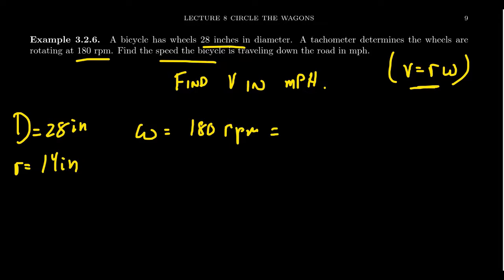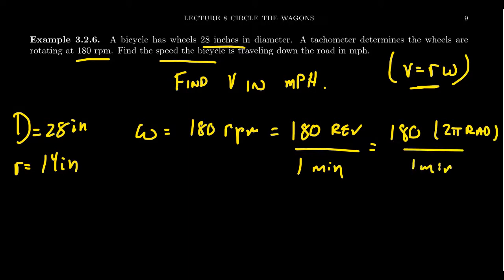Revolutions per minute means 180 revolutions per minute per one minute of time. And like we've seen what to do, one revolution is equal to 2π radians, like so. So we stick that together. 180 times 2, of course, is 360. So we see ω is equal to 360π radians per minute. So now we have an appropriate angular velocity.